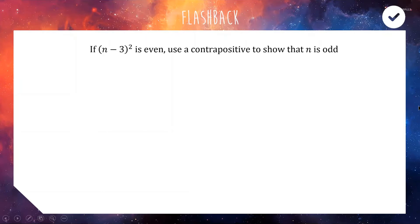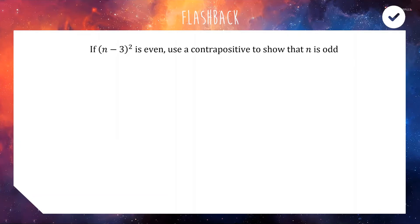G'day again Extension 2 — thought I would spoil you again with some fresh material. Before we get stuck in, here is a flashback question from our proof topic. I want you to try and use a contrapositive — if you can remember what that is — to show that if (n−3)² is an even number, then n is odd. Okay, pause the video and see if you can figure it out.